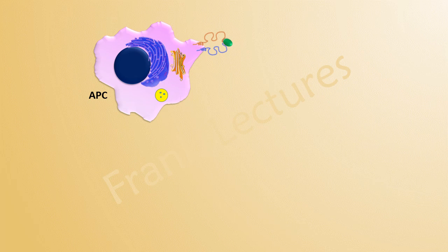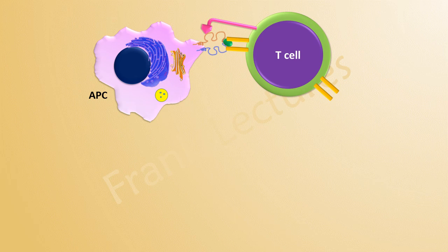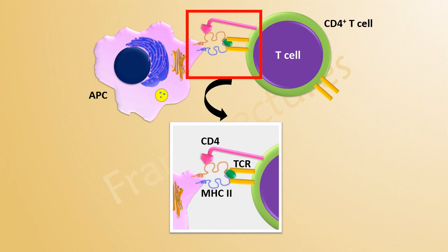These cells migrate from the site of infection to the lymph nodes, where they present antigen to the recirculating naive T-cells. These cells are CD4-positive naive cells because they recognize the MHC-2 peptide complex displayed by the antigen presenting cell.